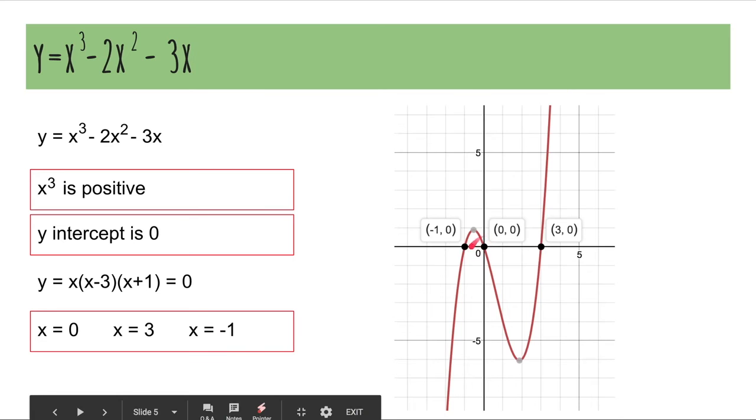So, the graph is going to look like this. It starts from the bottom because x cubed is positive, and it goes through your x solutions, turns, goes through the x solution, turns, and goes through the x solution.